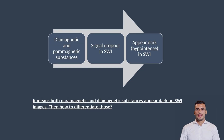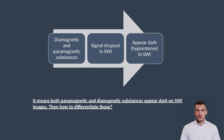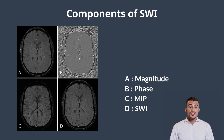Both diamagnetic and paramagnetic substances cause signal dropout in SWI and thus both appear dark. But then how do we differentiate between them? This is especially important when we want to differentiate between blood products and calcium, since calcium is diamagnetic and blood products like deoxyhemoglobin, ferritin, hemosiderin, and methemoglobin are paramagnetic. Before learning how to interpret SWI images and differentiate these substances, we need to know the components of SWI images.